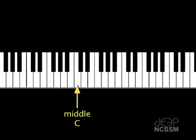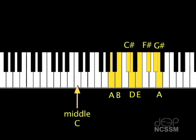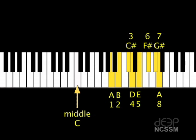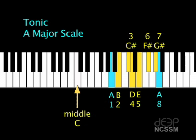An A major scale has eight tones. These can be represented with a number as we consider each step of the scale. Now, let's consider some of the important parts of a scale. Certainly, the two A's — number one and eight — are the most important notes of the scale. They are known as the tonic, and they bear the name of the scale. In this case, A major.